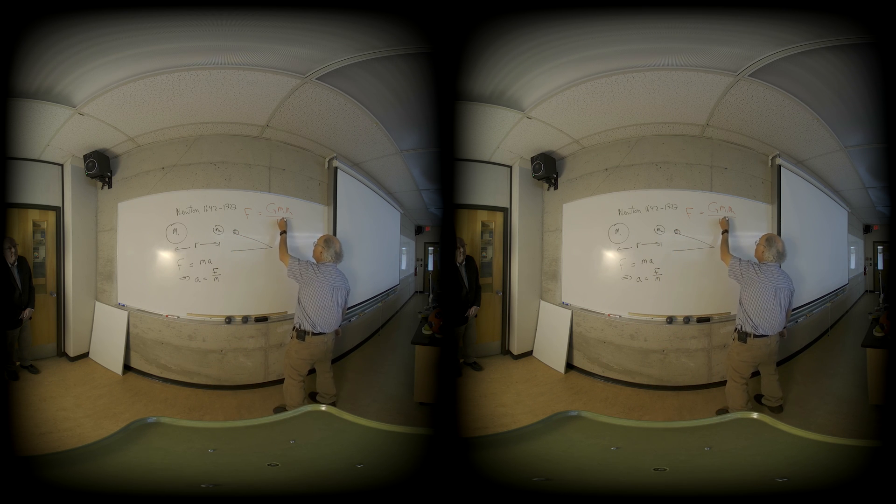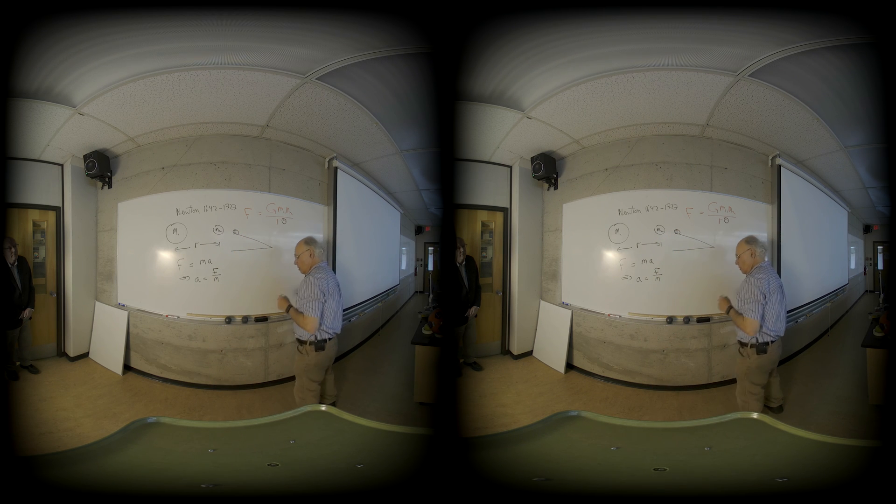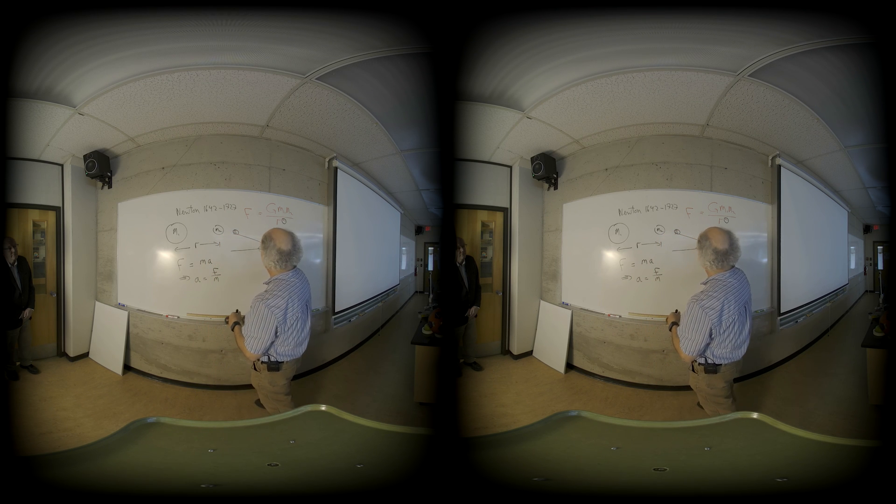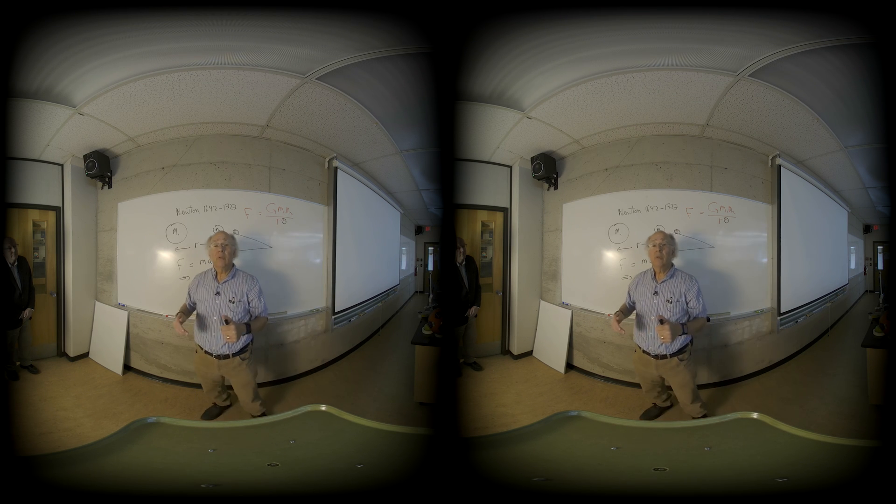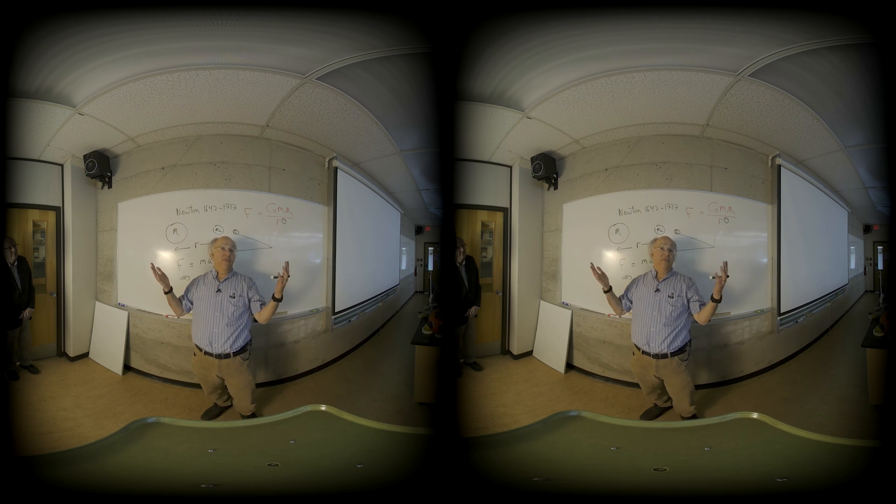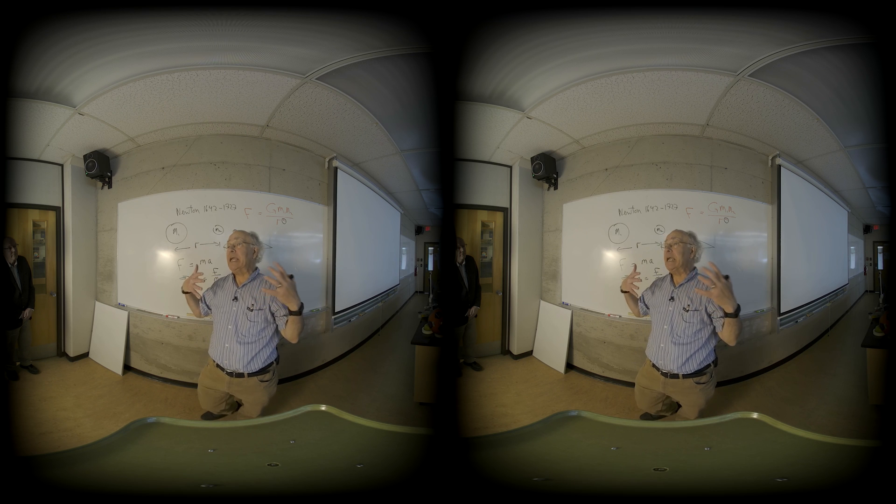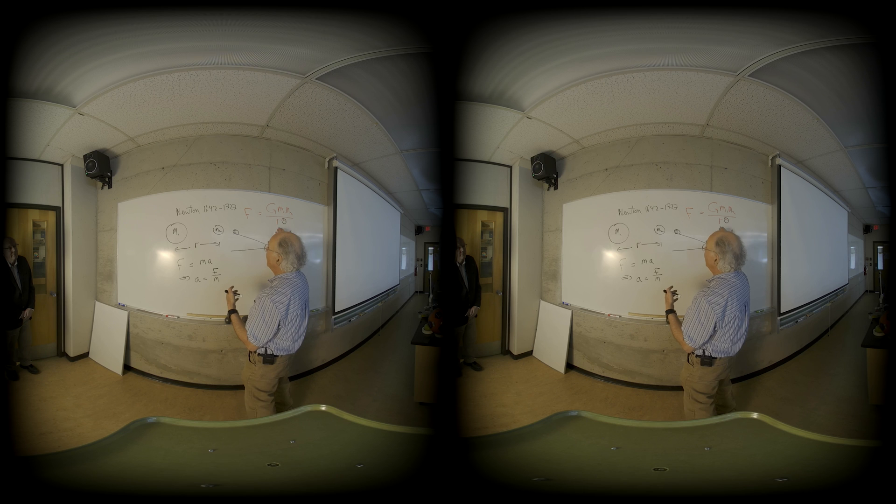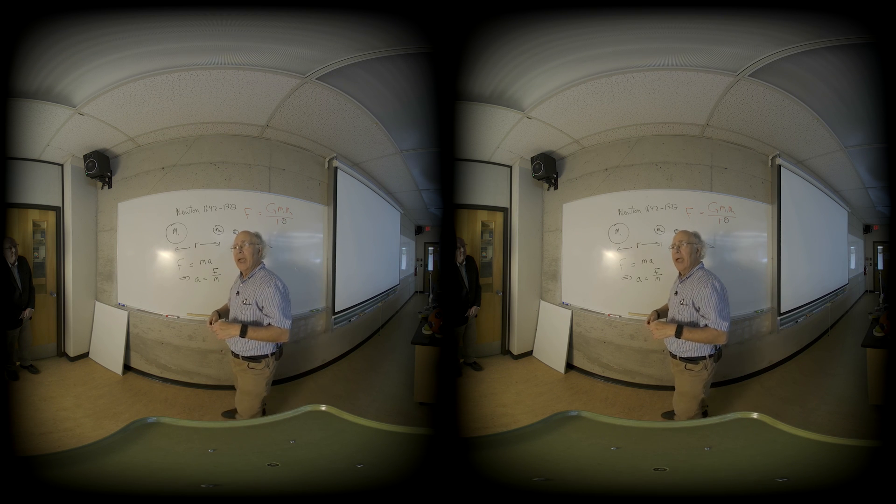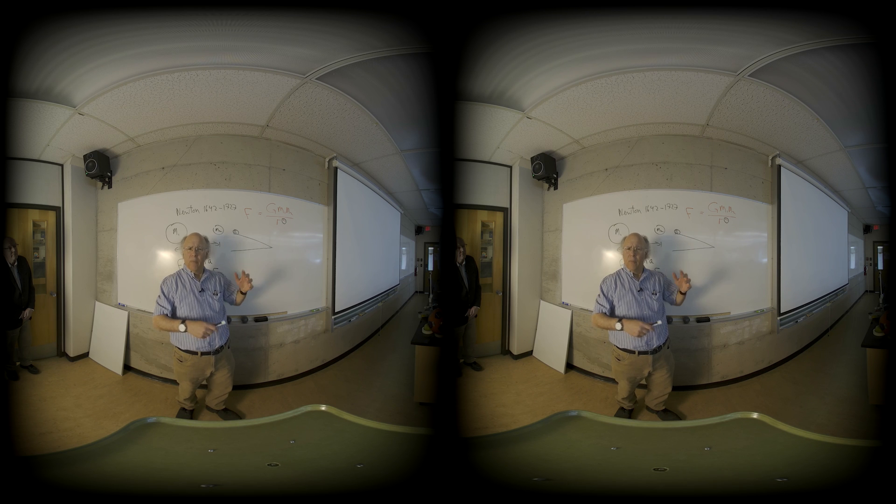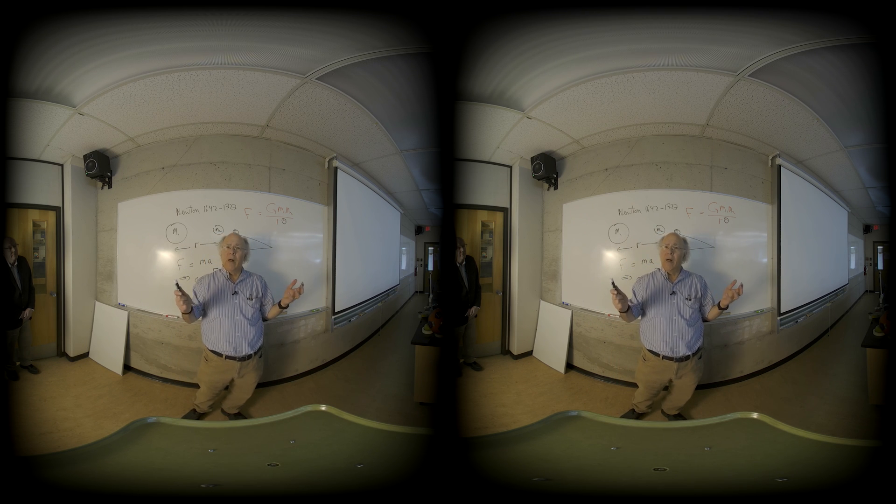How did he get the inverse square dependence? Well, Newton found that using his law, he could derive Kepler's third law of planetary motion. And this sort of, I wouldn't say confirmed the law, but it certainly lends strong support that his law had merit. But he actually wanted to do more, and he wanted to actually see if the law actually worked with bodies. Well, he had to use the earth and the moon as his bodies.